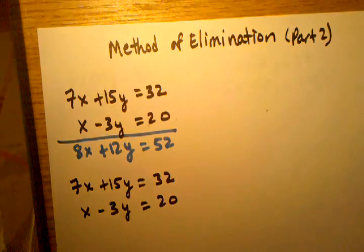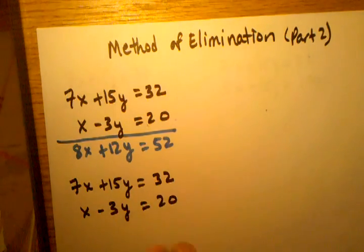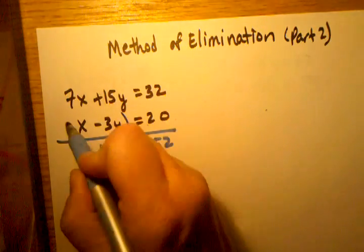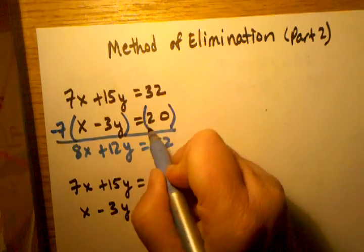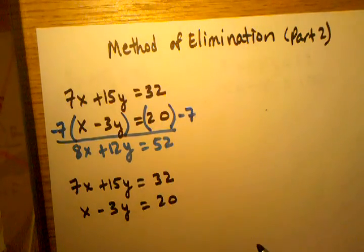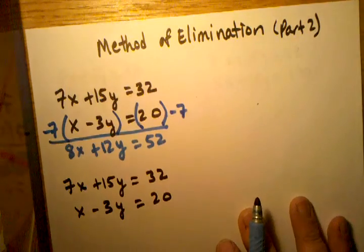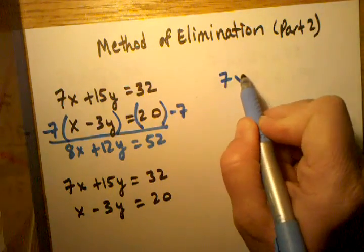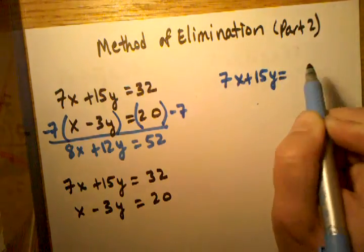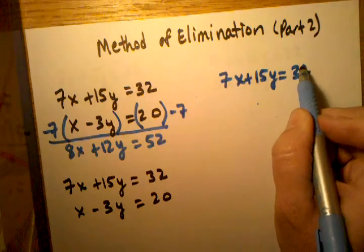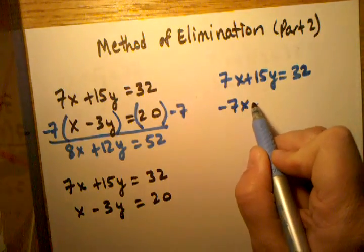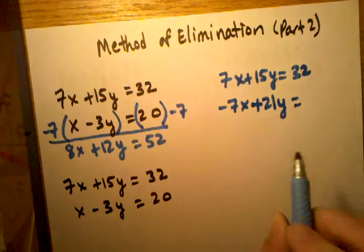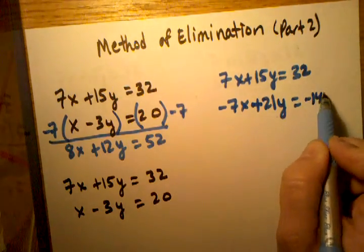One thing I can do if I wanted to I can multiply the bottom equation by negative 7 on both sides. If I did that my equivalent system of equations would be negative 7x plus 21y equals negative 140.